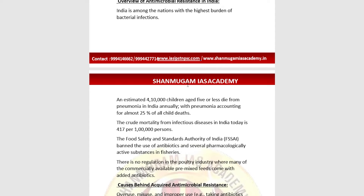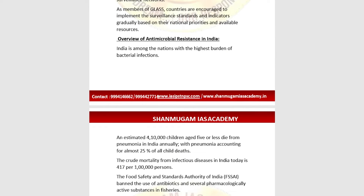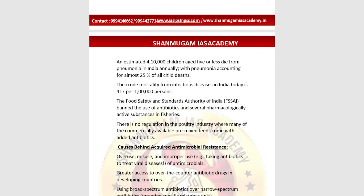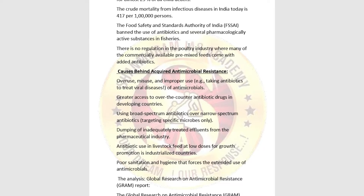India is among the nations with the highest burden of bacterial infections. An estimated more than four lakh children under the age of five have died due to pneumonia in India, and the crude mortality from infectious disease is 417 per one lakh persons. The Food Safety and Standards Authority of India (FSSAI) has banned antibiotics in the fisheries sector, but there is no regulation in the poultry industry where commercially available pre-mixed feeds come with added antibiotics.